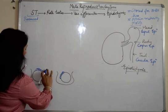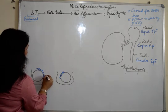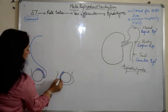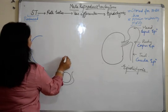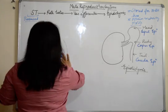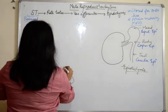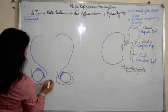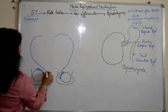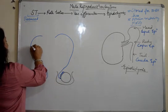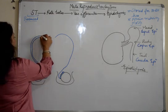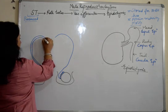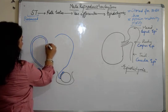From the epididymis arises this tube. It's a tube so we'll make two lines to represent it.